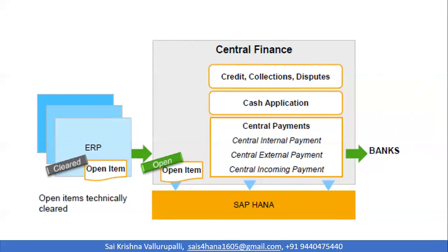For example, when you have an open item sitting in one of the ERPs and you want that open item to be cleared, you have two options. You can have the open item cleared in the resident ERP and connect it to central finance so that only cleared items are brought in for analysis. Or you can transfer the open item into central finance and integrate with banks, where the bank integration helps the cash application module clear the open item and post it to the transactional server. So central finance can act as both a reporting system and an actual transactional system.